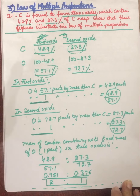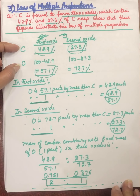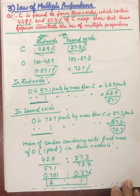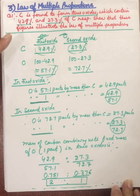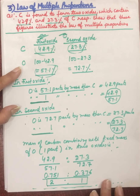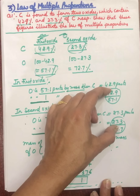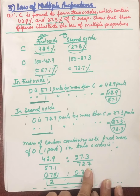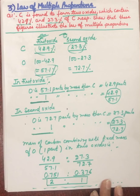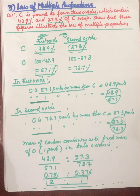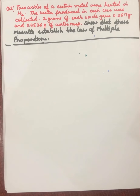So for the law of multiple proportion, this is the method to follow: we need the masses of the two elements in the compound, then fix one element's amount each time, find the other element's amount in each case, write those in a ratio form, and that ratio will come out to be a simple multiple ratio. Now coming to the second numerical of the law of multiple proportion.